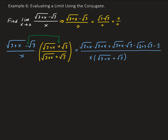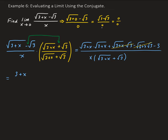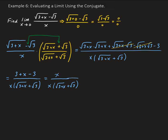We have square root of 3 plus x times square root of 3 — this is going to cancel out, so we get 0 there. Furthermore, we have square root of 3 plus x times square root of 3 plus x, so that leaves us with 3 plus x, and then we have minus 3, all divided by x times square root of 3 plus x plus root 3. This leaves us with x over x, and these cancel out, leaving us with 1 over square root of 3 plus x plus root 3.